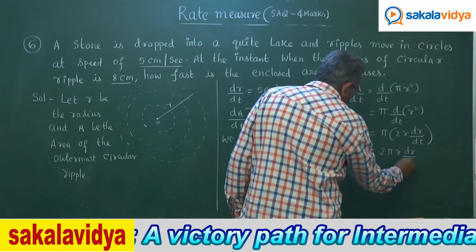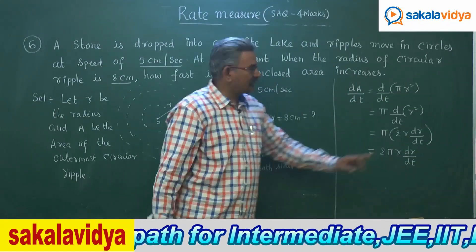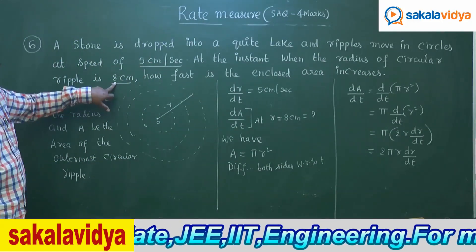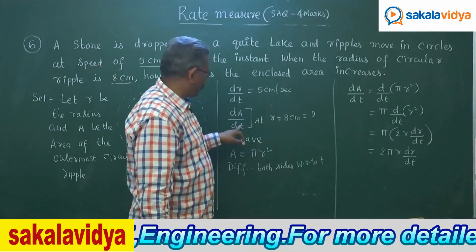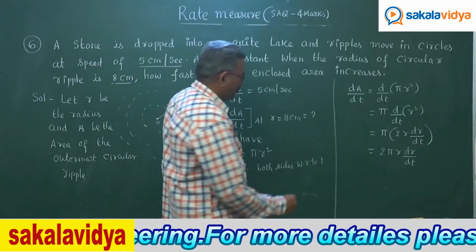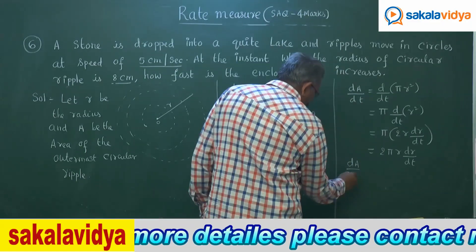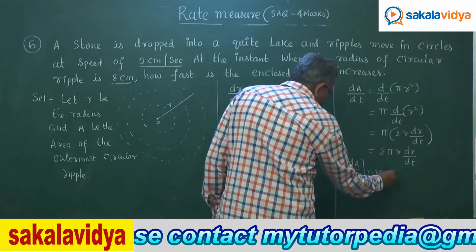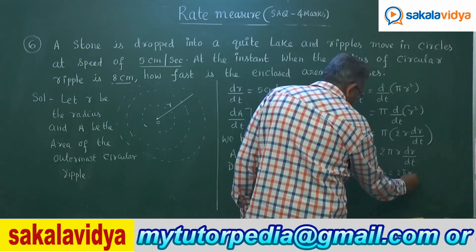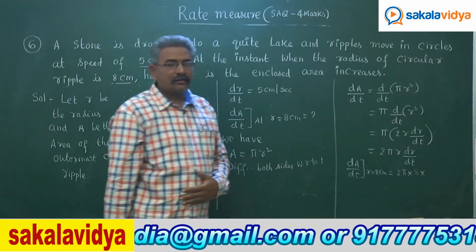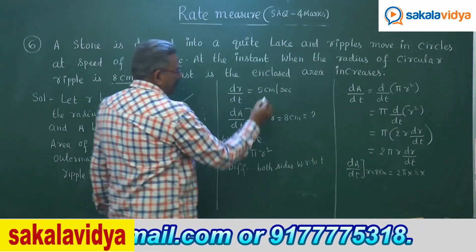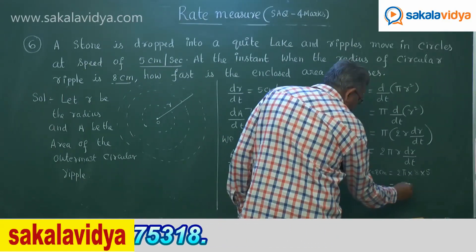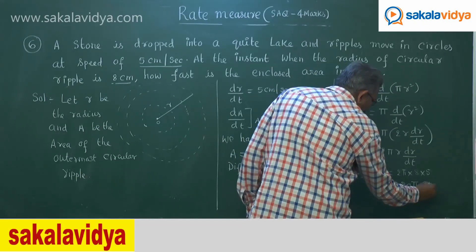Now substituting the values: r = 8 cm and dr/dt = 5 cm/s. So dA/dt = 2π × 8 × 5 = 80π cm² per second. This is the answer.